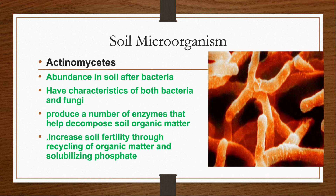Actinomycetes are abundant in soil after bacteria, and they have characteristics of both bacteria and fungi. They produce a number of enzymes that help decompose soil organic matter. Actinomycetes increase soil fertility through recycling of soil organic matter and solubilizing phosphate. If phosphorus is insoluble in soil, it is unavailable for plants.